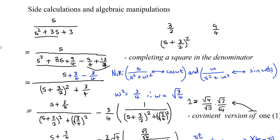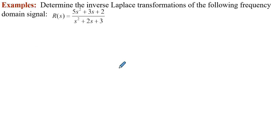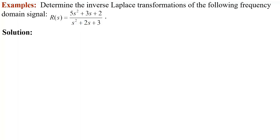I would like to comment on the process of taking an expression in terms of s, which we take as a Laplace transform that does not resemble anything on the table, and transforming it so that it ends up looking like a transform on the table — possibly needing properties like the exponential shift theorem. Now let's look at the example. The first thing to note is that this is an improper fraction: the degree of the numerator is greater than or equal to the degree of the polynomial in the denominator.